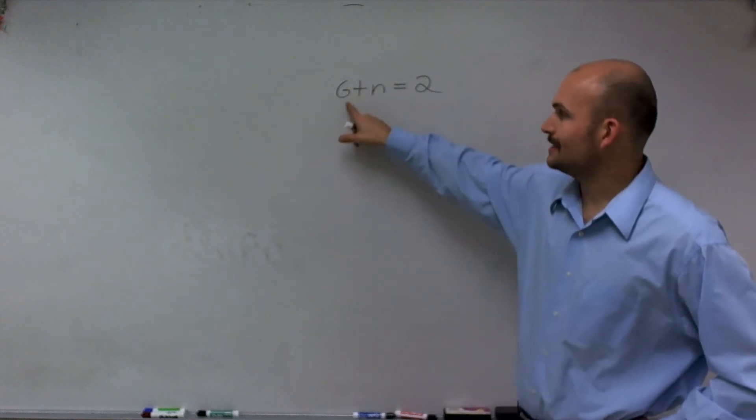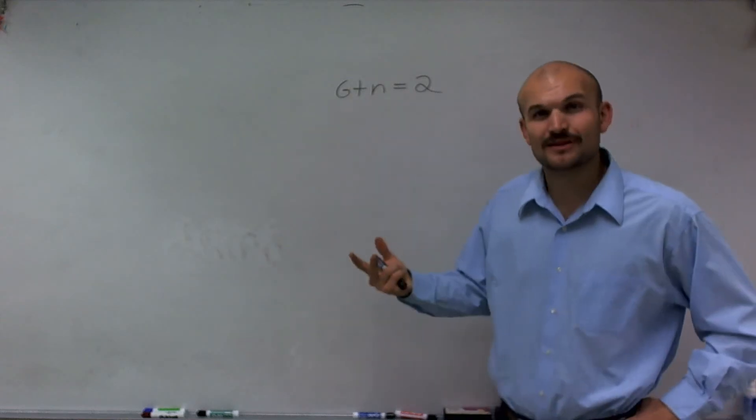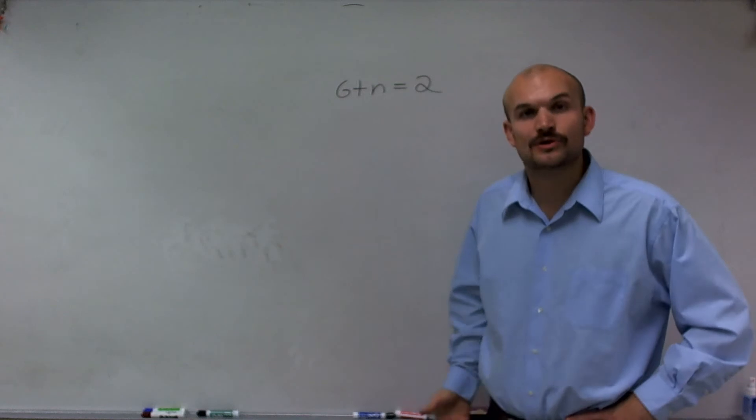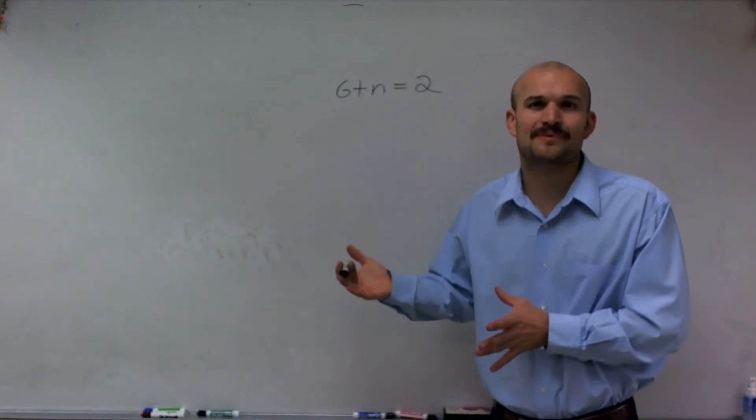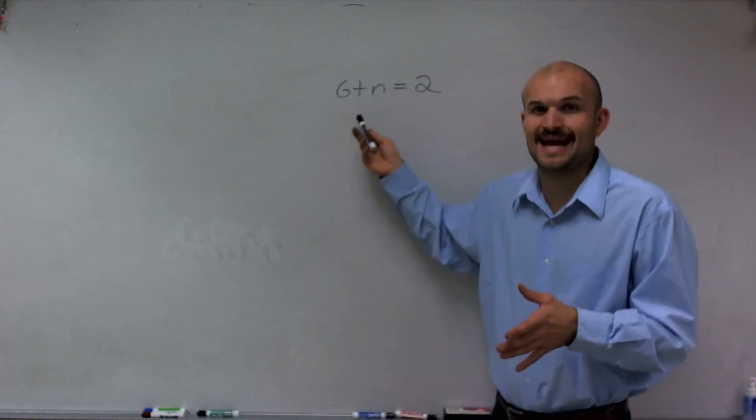To do that, I need to determine what's happening to the n. It might be a little bit hard for how this problem is currently written. It says 6 plus n equals 2. So what is happening to the n? It seems like I'm adding n to the 6.